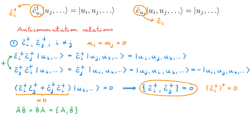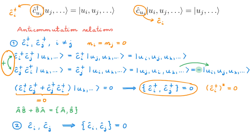In the companion video on bosonic operators, we find that bosons obey commutation relations rather than anti-commutation relations. This difference reflects the respective symmetric and antisymmetric nature of their states. The vanishing anticommutator for fermions arises because exchanging two fermions introduces an extra minus sign due to antisymmetry. For bosons, exchanging two bosons doesn't change the state, so we subtract rather than add, giving a commutator. By the same exercise, two annihilation operators also anticommute — again a consequence of the antisymmetry of fermionic states.